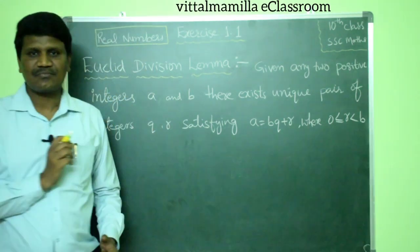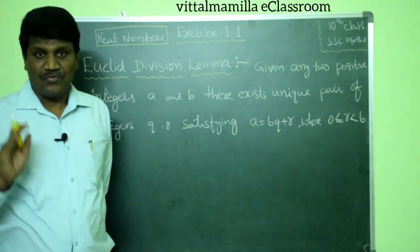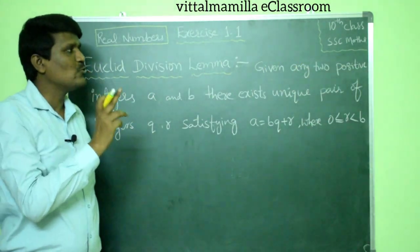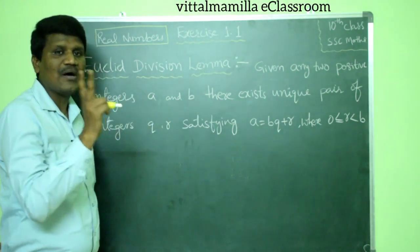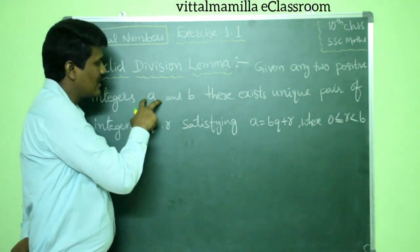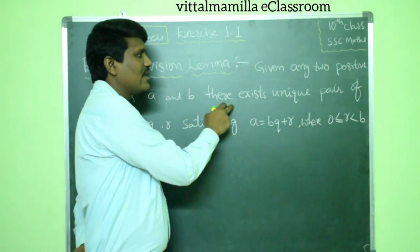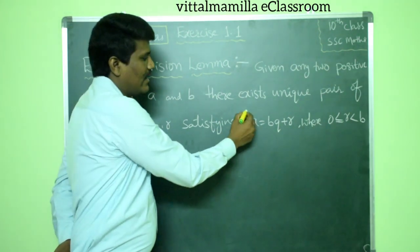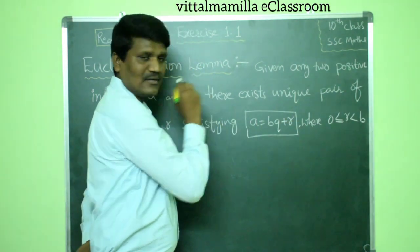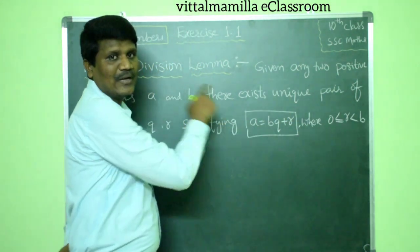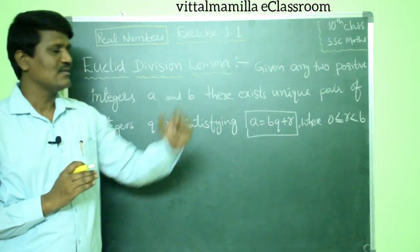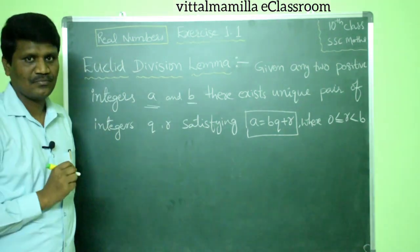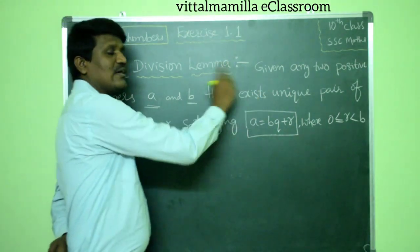Now let us see what is Euclid division lemma. Given any two positive integers A and B, there exist a unique pair of integers Q and R satisfying A = BQ + R. So two numbers A and B are given, and Q and R are the two unique integers we obtain.